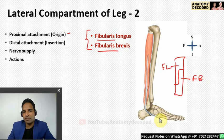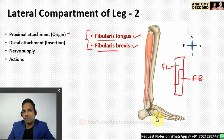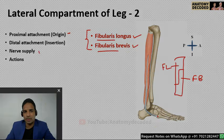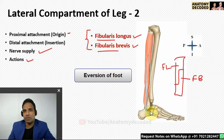Fibularis longus has its distal attachment along the inferolateral aspect of the base of the first metatarsal and medial cuneiform bone — the same bone as tibialis anterior but on the opposite side. Its tendon passes under a groove below the cuboid bone. Fibularis brevis attaches to the base of the fifth metatarsal. Nerve supply is by the superficial fibular nerve. The action of both muscles is eversion of the foot — raising the lateral aspect of the foot.